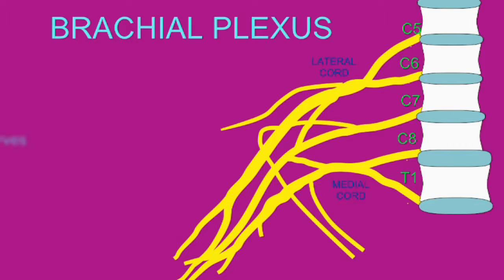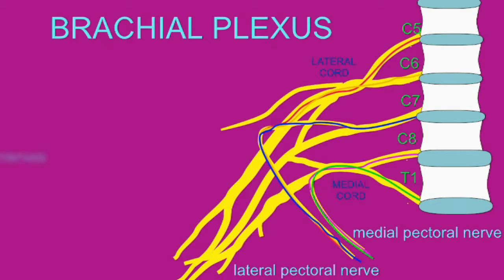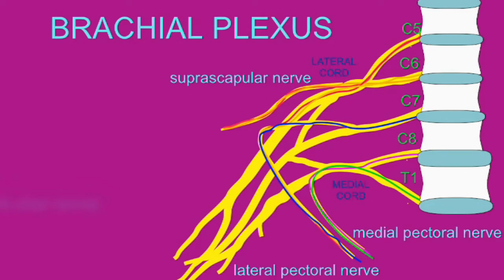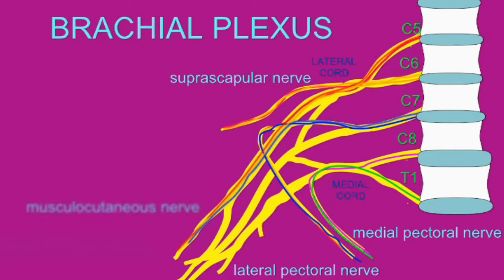From the lateral and medial cords arise the medial and lateral pectoral nerves, which innervate the chest muscles. The suprascapular nerve exits just prior to the formation of the lateral cord and innervates rotator cuff muscles.